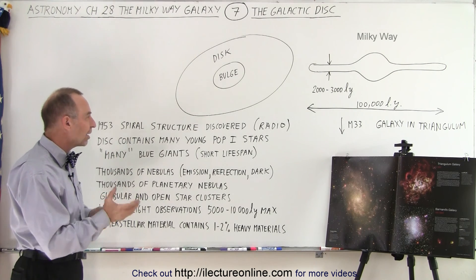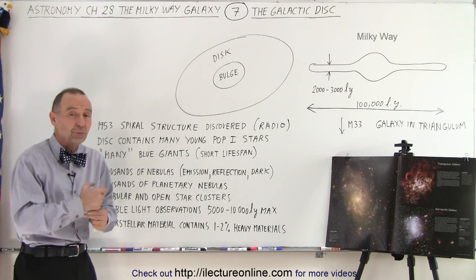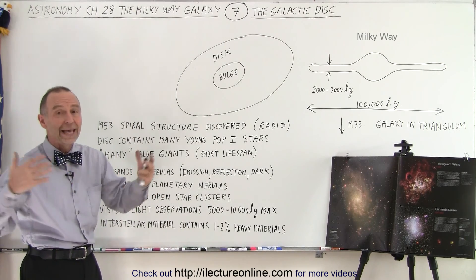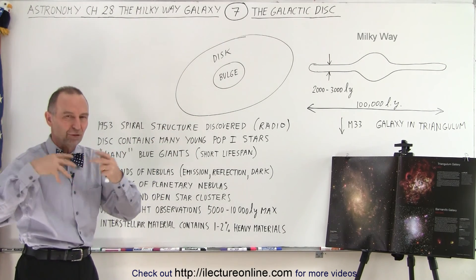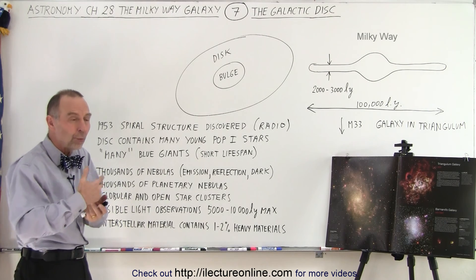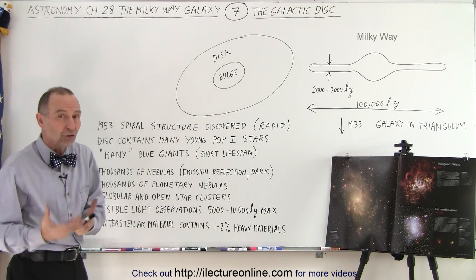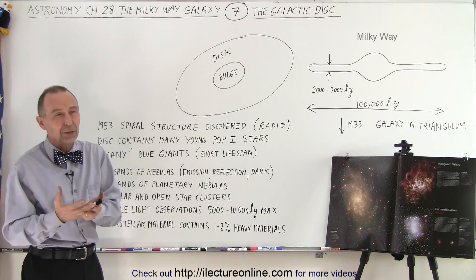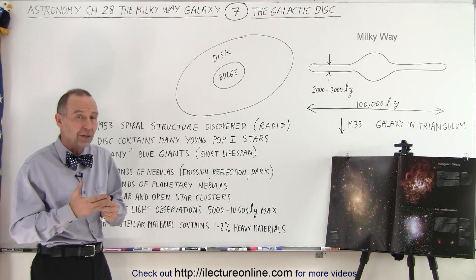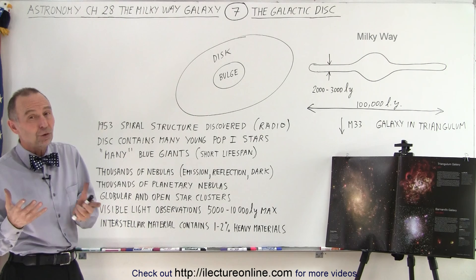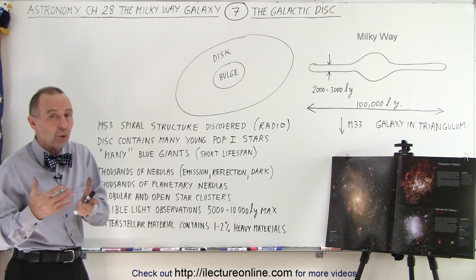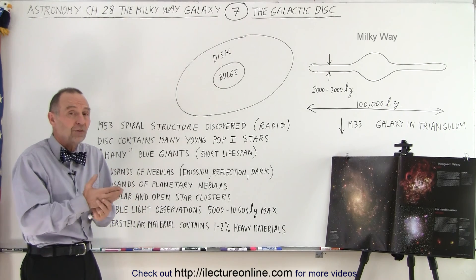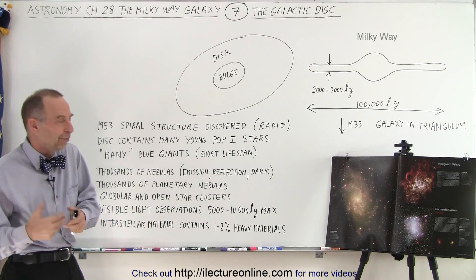The disk contains a lot of young, what we call population 1 stars. Population 1 stars are recently formed out of material that's been swirling around, fed by the death of supermassive stars through supernova explosions with heavy materials. The younger the stars are, the more likely they contain heavy material — about 1 to 2%, which is enormous compared to older stars that are 99.9% or more hydrogen and helium.